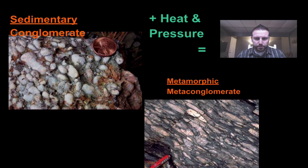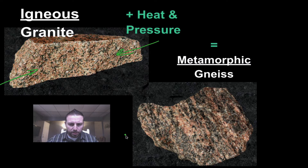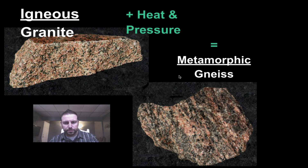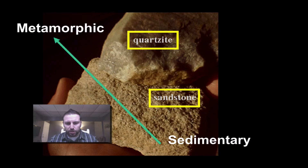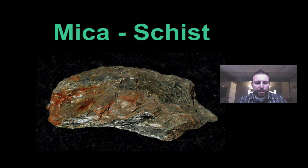Igneous granite — which we looked at in class with its quartz, amphiboles, and feldspars — if we apply pressure to it, we get a pattern of alternating dark and light recrystallization bands. Granite turns into gneiss. Similarly, we can take sandstone, apply heat and pressure to it, and we get quartzite. Here's another example of a metamorphic rock.